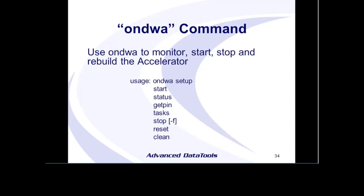The ondwa command is a command-line tool you can use to monitor what the accelerator is doing. You can start and stop the accelerator, and if you make a configuration change you need to rebuild it. There are various options and arguments you can pass to ondwa.